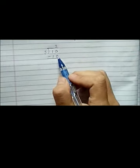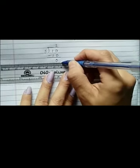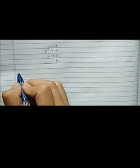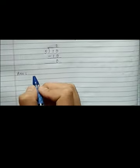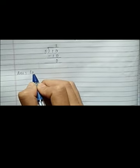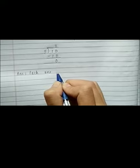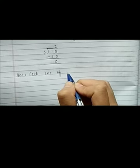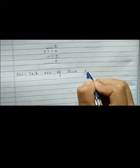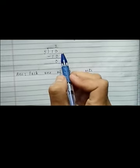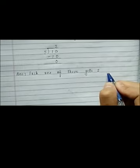We'll subtract 10 from 10. 10 minus 10 is 0. So we don't have a remainder. We will write the answer. In the question, it is asked how many sweets did each one of them get. So we will write the answer statement. Each one of them gets — we will write the number we get in the quotient — two sweets.